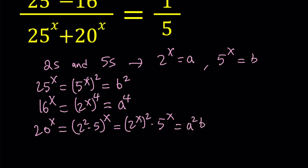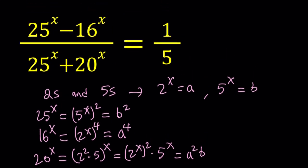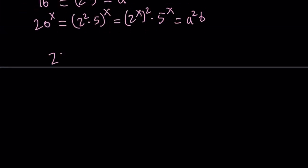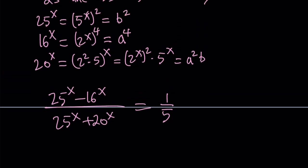So we're ready to substitute everything into the original equation now. Let's replace 25 to the power x with b squared. Let me rewrite the original problem so you can see what that looks like.